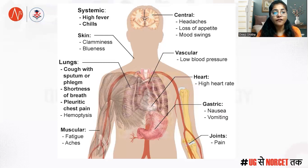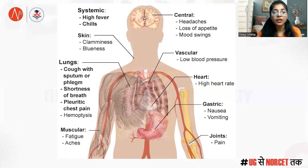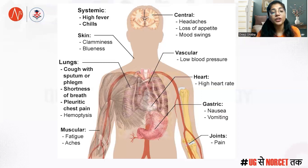Coming to the major lung symptoms: cough with sputum, shortness of breath — which is often the first sign when a patient comes to the OPD saying 'I am having difficulty breathing, I am not able to take a breath' — as well as pleuritic chest pain and hemoptysis. Whenever a patient comes to the medicine OPD or pulmonary OPD with these complaints, investigate properly, do a physical examination, take history, and assess the patient thoroughly.